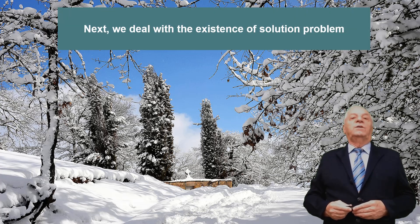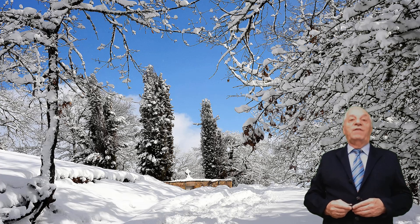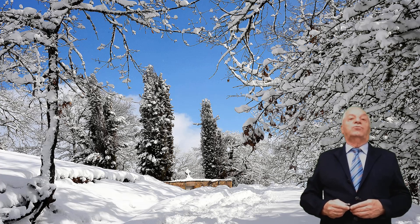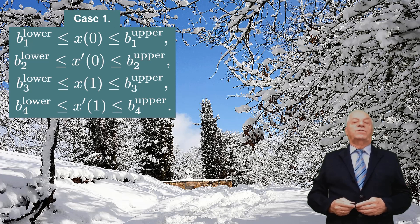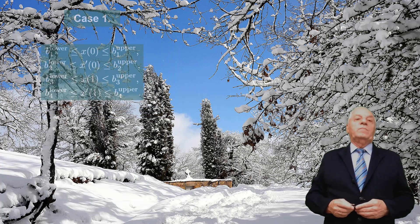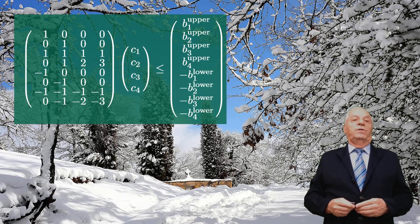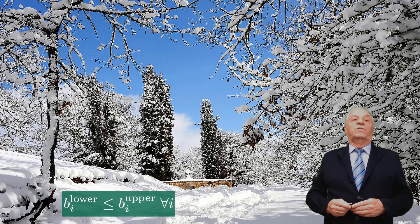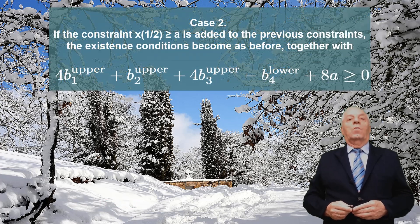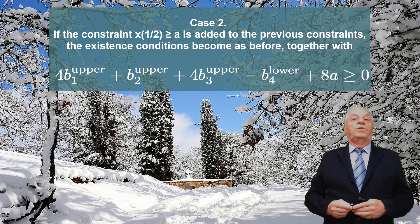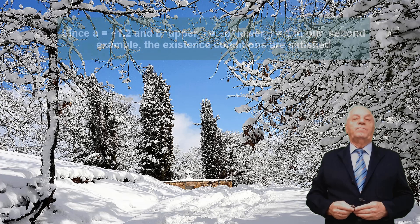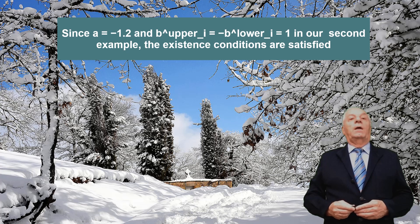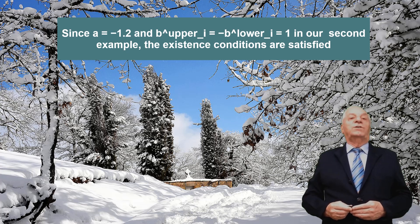Next, we deal with the existence of solution problem. To illustrate how the method described can be applied, two cases of parameterized constraints are considered and the conditions for the existence of a solution are determined. Case 1: consider the set of constraints indicated — this system leads to the well-known and obvious conditions for existence of solution. Case 2: if the constraint x(1/2) ≥ a is added, the existence conditions include, as before, together with a symbolic expression. Since a = −1.2 and b-upper_i = −b-lower_i = 1 in our second example, the existence conditions are satisfied.